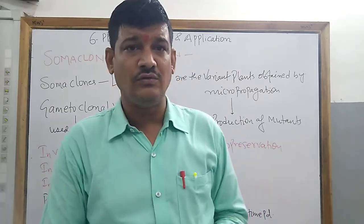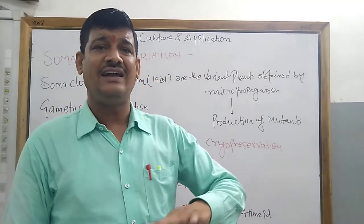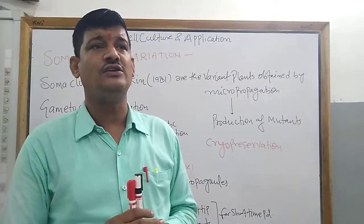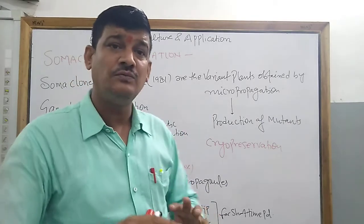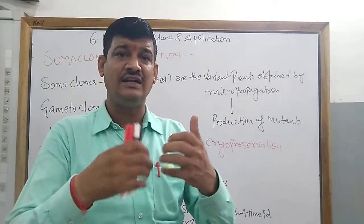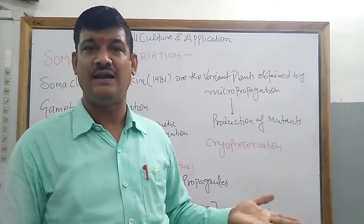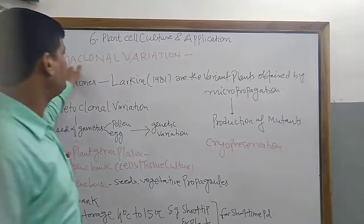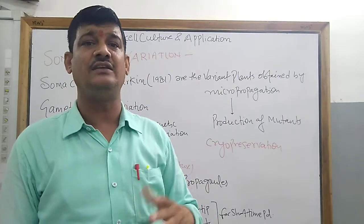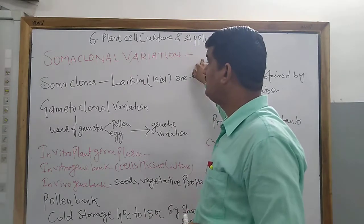Somaclones are those genetically identical progeny of plants which are identical to their own parents, and they are the outcome of micropropagation or tissue culture technique. The question is why we call it somaclonal variation. Variation means there is something different — some genetic differences take place when the plant is regenerated from cells or from the explant. Somaclonal variation refers to all those genetic variations which occur in the progeny plant rather than the parent plant.